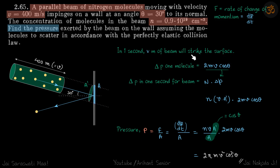We're going to find the force by the standard mechanics equation: force is rate of change of momentum, dP by dt. So we have to find change in momentum per second. Let's talk about how many molecules are going to hit the wall in one second. That will be the length of the beam, which is 400 meters, because the velocity of the beam is 400 meters per second.